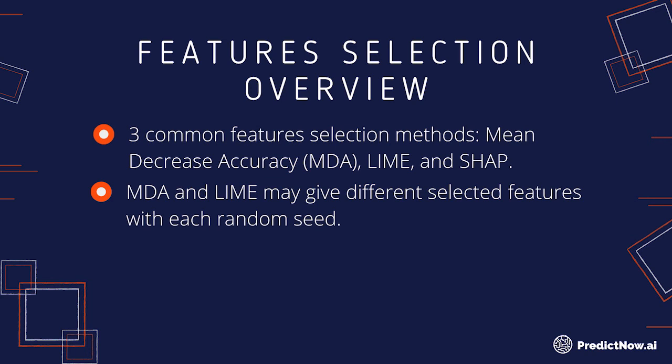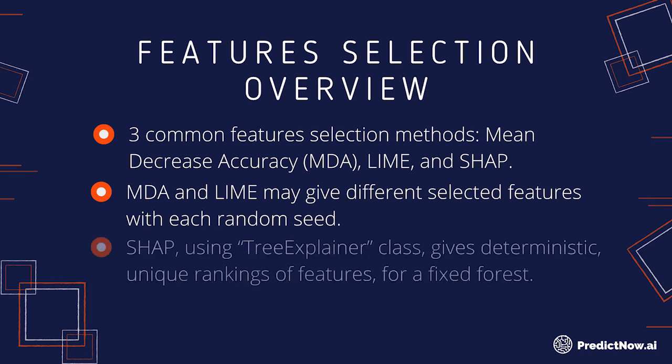In particular, the version of SHAP that we use employs a configuration called a tree explainer. It guarantees a unique ranking of features, so there is no randomness unlike MDA. That is what we use as our default.